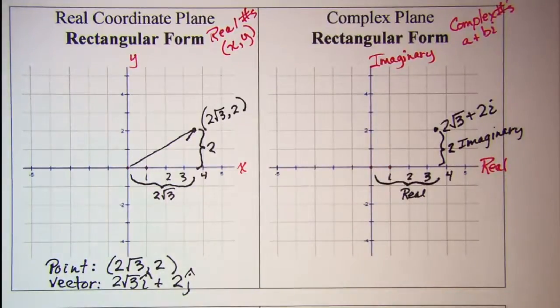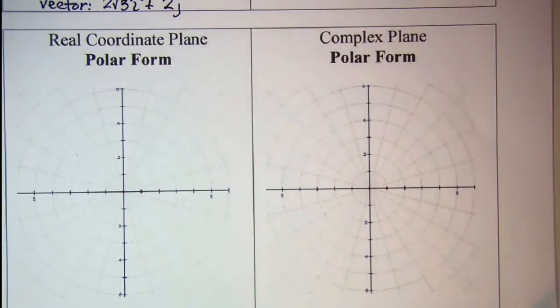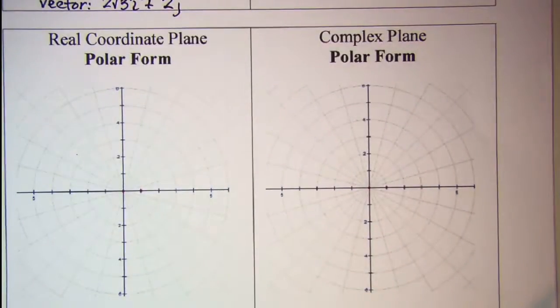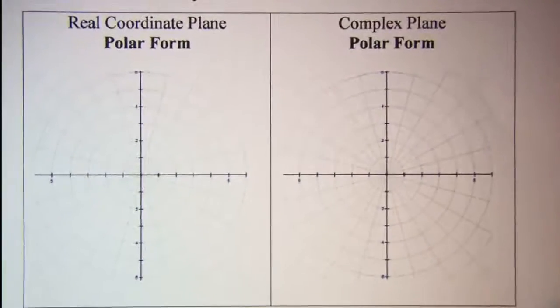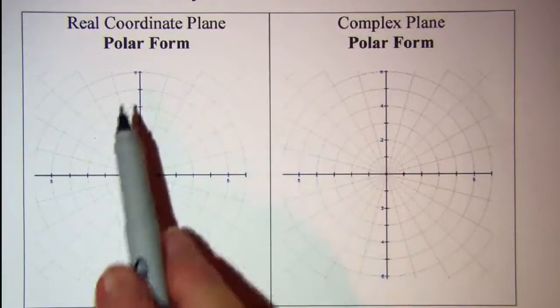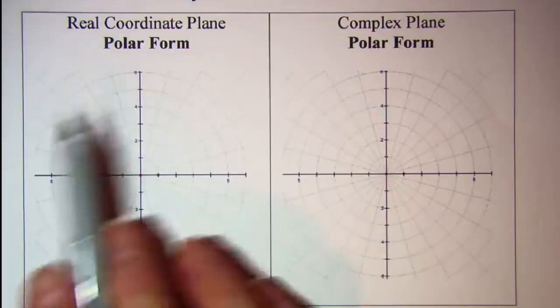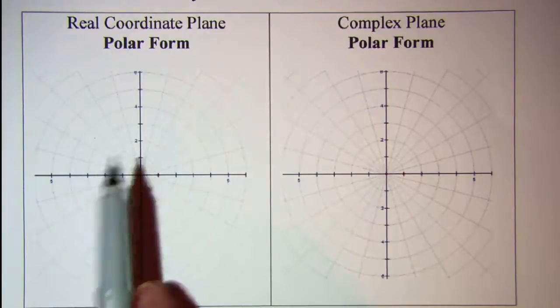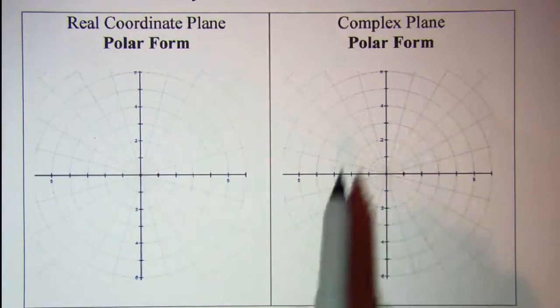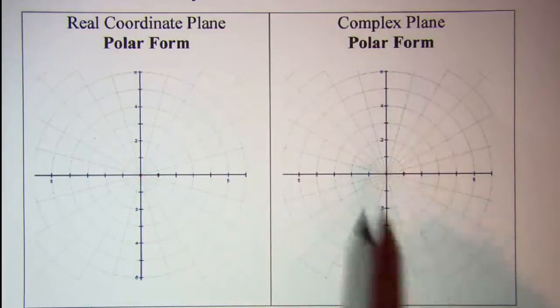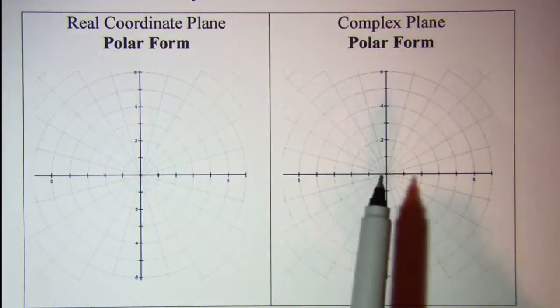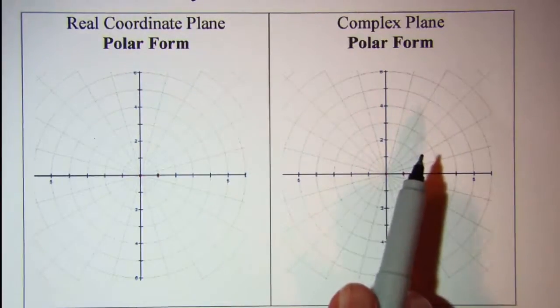Now let's look at the real coordinate plane if we were doing it in polar form. On the left we have our real coordinate plane polar form and on the right you'll notice that the polar form looks the same, but our notations will be a little bit different.